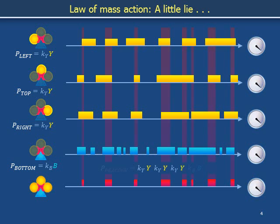Likewise, the right groove contributes another multiplicative factor of k sub y times concentration y, and the triangular groove contributes a factor of k sub b times concentration b. The proportion of time this particular pair of hotpants is part of a peacock-shaped complex is the product of the fractions of time that the individual grooves are occupied.